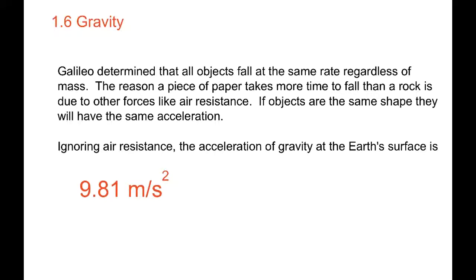The key thing you have to understand with gravity is that all things fall at the exact same rate. In the old days, they used to think that things that were heavier, like a brick, would fall faster than a feather. But Galileo figured out it was due to air resistance. He dropped a lead cannonball and a wood cannonball of the same size from the Leaning Tower of Pisa in Italy, and they hit the ground at the exact same time.